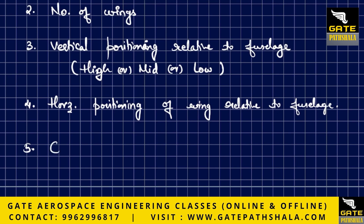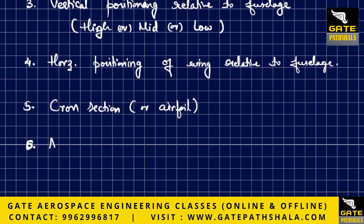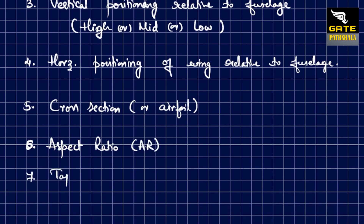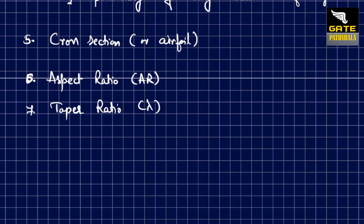The next parameter is the type of cross-section of the wing, which we label as the airfoil. Then comes the aspect ratio of the wing, denoted by AR, and the taper ratio of the wing, denoted by lambda (λ). Each parameter has its advantages, disadvantages, how it is computed, and where it is located.